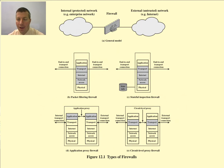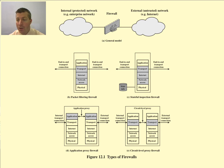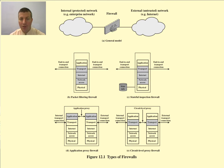Here are some different models of firewalls. You have your internal protected network on the left side, and a firewall keeping out external or untrusted network traffic. There are four types of firewalls: packet filtering, stateful inspection, application proxy, and circuit level proxy. We will discuss those on the next few slides.